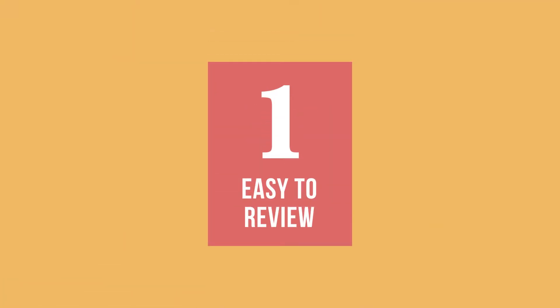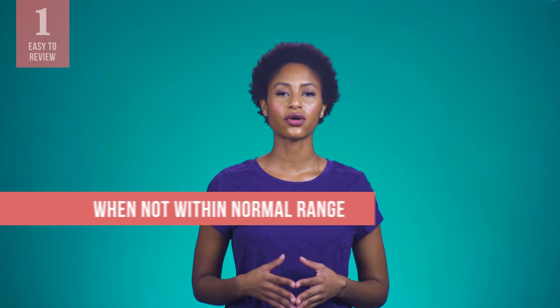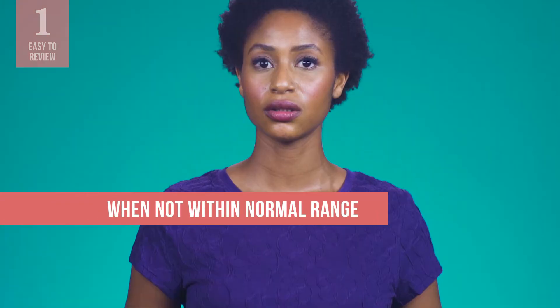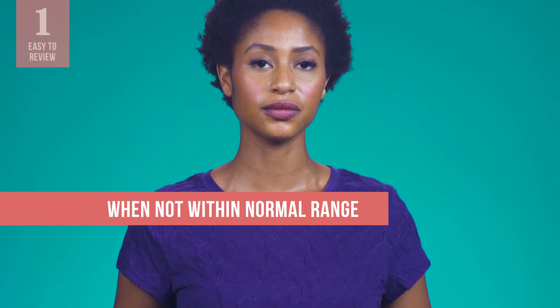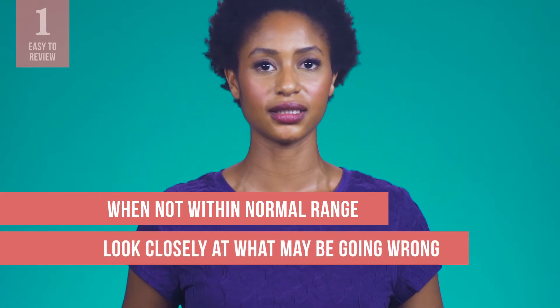Let us talk about three important qualities of indicators. First, notice how these indicators are easy to review and understand. Like a meter on a car dashboard, a process indicator can tell you at a glance whether you are within the normal range, as long as you have an idea of what normal is. When you see that any process indicators are not within a normal range or when you see repeated problems, it is a sign that you need to look closely at what may be going wrong with that activity.